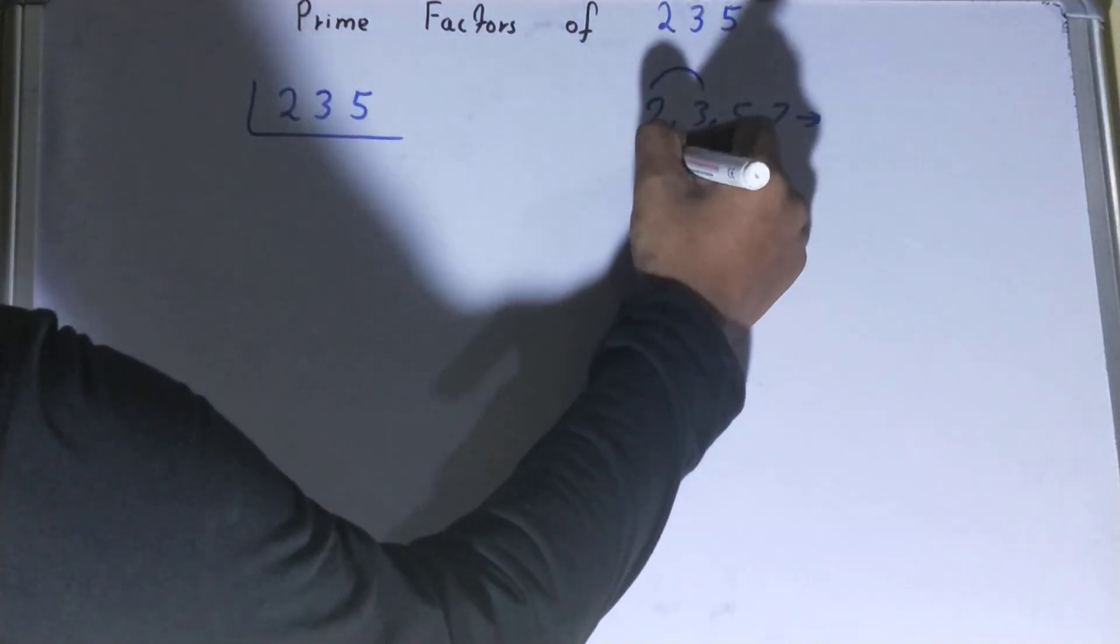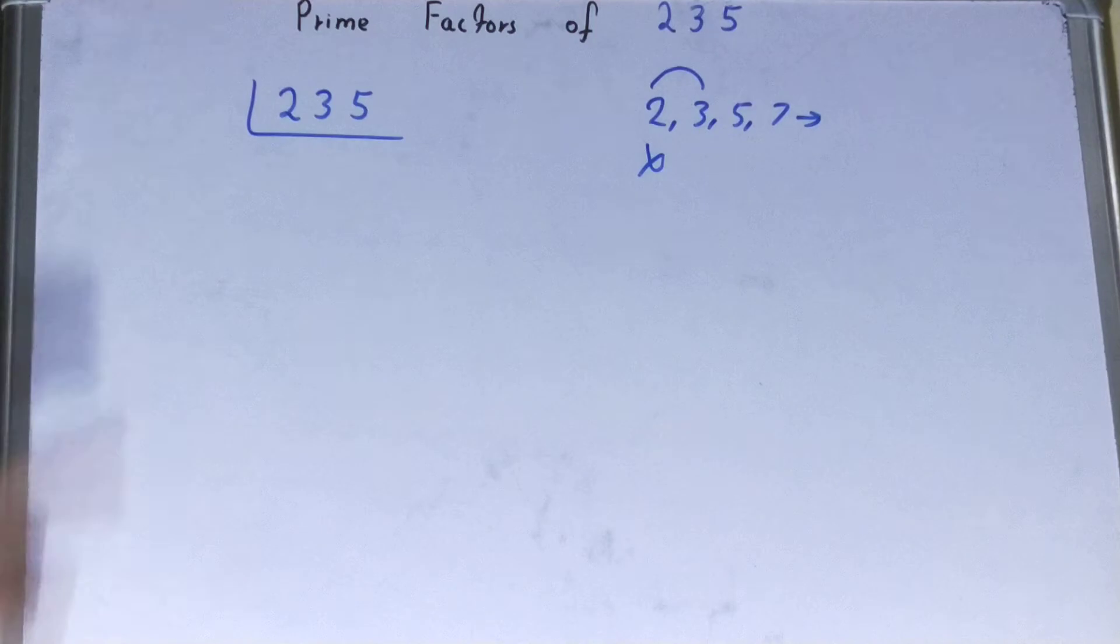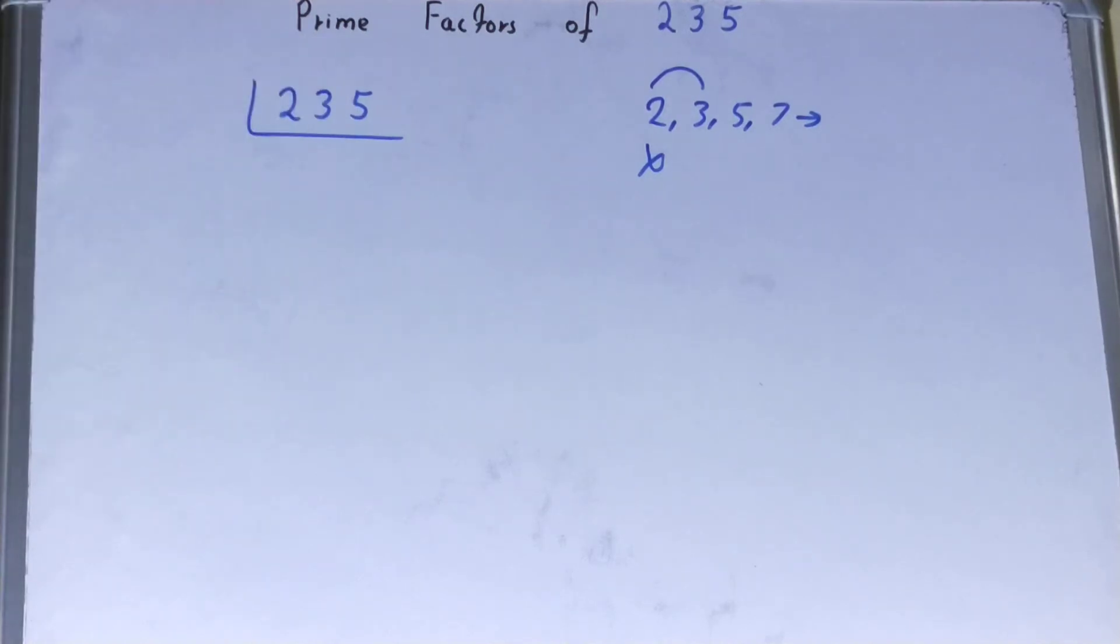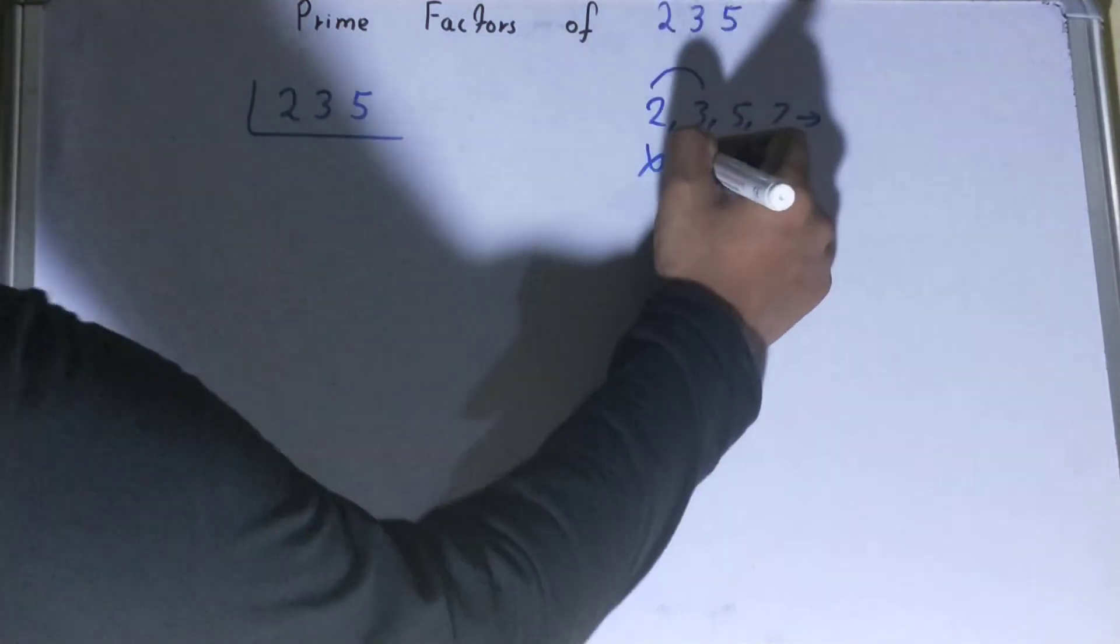So we'll go to the next lowest prime number, that is 3. Is the number 235 divisible by 3? Let us check: 3 into 23 is 7, times 3 is 21, then 2, 5... it is not divisible.